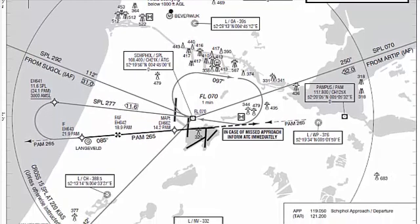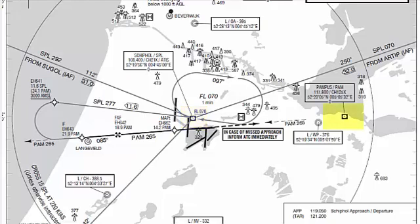As you can see, this is an instrument approach for runway 09 VOR DME. We will do an approach by tracking the Pampas VOR, which is right over here. Initially, we will track Skibole VOR to approach the airport, and then we will track Pampas VOR for our final approach.